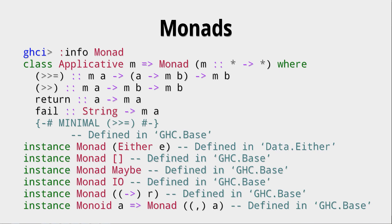the greater-greater-equals operator. But let's make another observation right now. Maybe and IO — the types and the IO actions that we have seen before — are monads. So this is really interesting, because we have worked with monads before, we just didn't know.